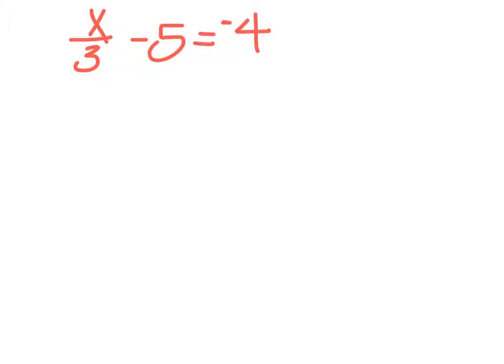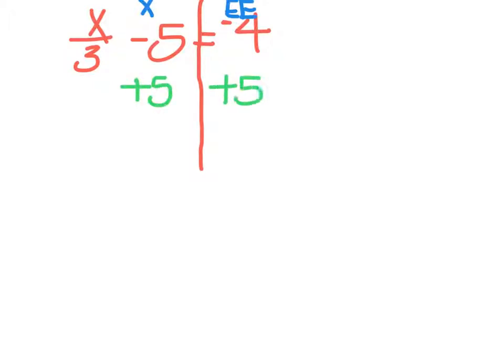For our next problem, we have x over 3 minus 5 equals negative 4. The first thing I'm going to do is draw my line through the middle and label my sides. I'm solving again for x, so x goes on the left and everything else goes on the right-hand side. I've now got to figure out what's in the wrong place. Well, this minus 5 right here doesn't have an x with it, so that's what needs to go. To get rid of something that's minus, I'm going to do the opposite and add 5 to both sides, because whatever I do to one side, I have to do to the other.